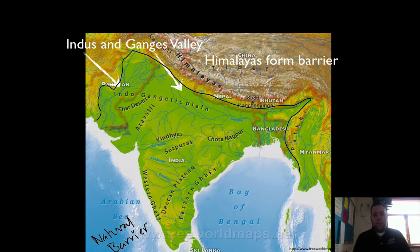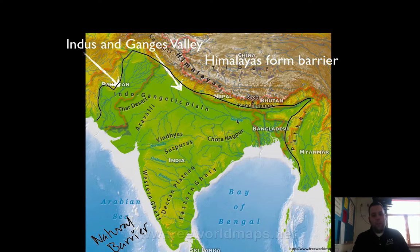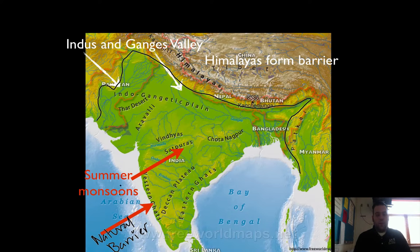Another thing to look at is: if there are rivers, where's the water coming from? A lot of these tributaries run from the Himalayan mountains, so we have a lot of snowcap melting that floods the river valleys. Other ways that we get rain in India are because of monsoons. A monsoon is a seasonal wind. In the summertime, the monsoons blow from the oceans and bring all of this moisture in — that's when it rains.